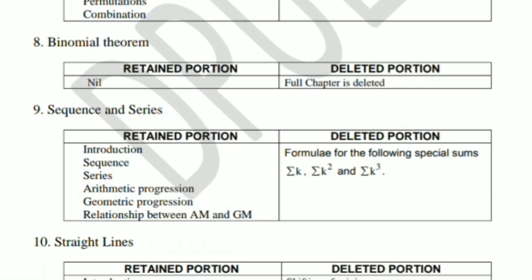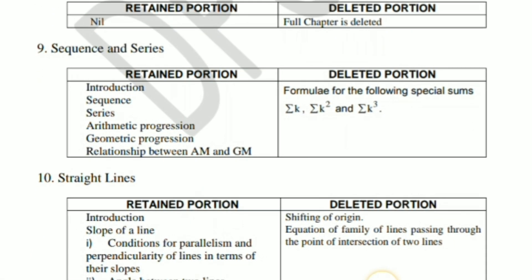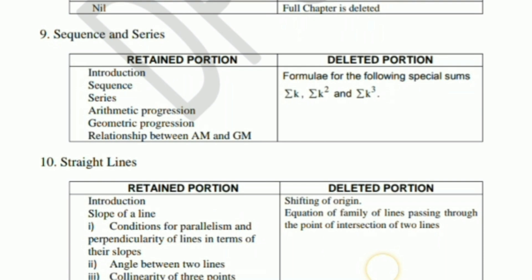Next, straight line — the shift of origin and the equation of the family of lines passing through the point of intersection of two lines — this concept is deleted in the straight line chapter.